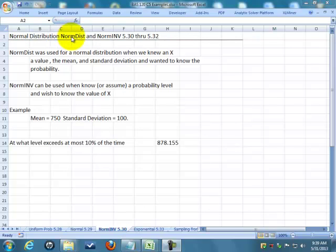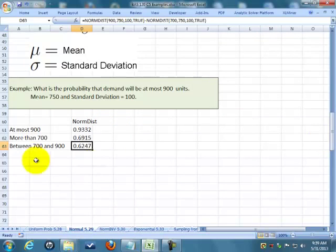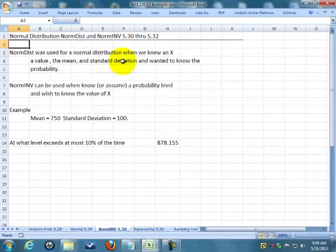We talked about NORMDIST for the normal distribution. That's where NORMDIST is used when we know the value of X, or an assumed value of X. Like we did the example, we might know 900. We know the mean, we know the standard deviation. What we're trying to figure out is, what is the probability of that event X?